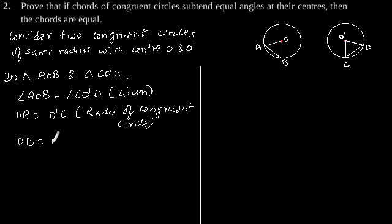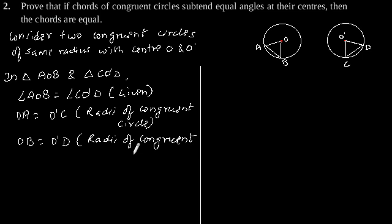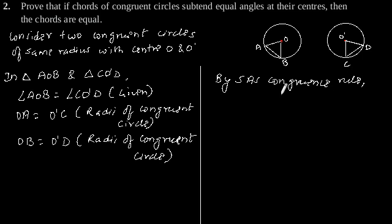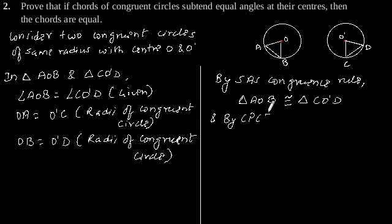And OB is equal to O'D, since they are also radii of congruent circles. So by the SAS congruence rule, we can say that triangle AOB is congruent to triangle CO'D. And by CPCT, AB is equal to CD.